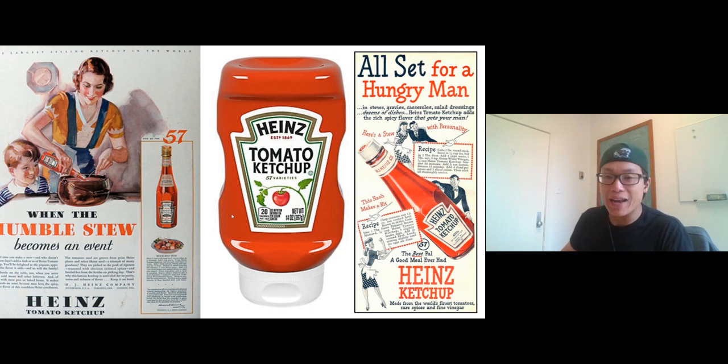On the right side is an ad from 1946. If you look at the 1932 one, see the 57 right there. 57 is his lucky number. He was on a train somewhere and he looked at the side and saw 21 variety of shoes and he's like, 'Yeah that's kind of cool.' He was trying to say that his company sells a lot of condiments, but at the time he sold over 60 condiments already, but he likes 57 because it's his lucky number.